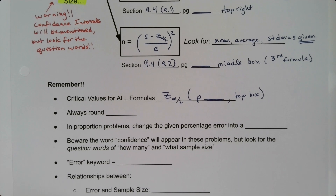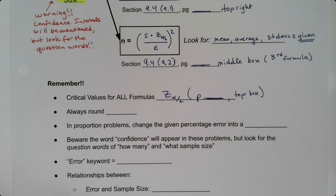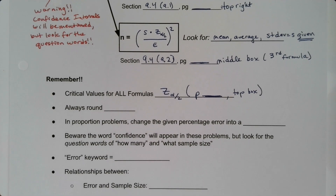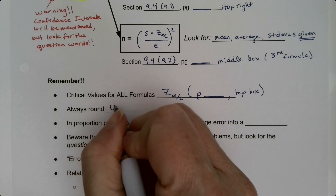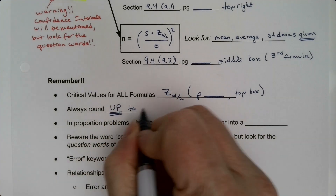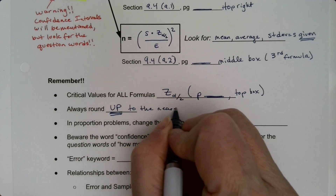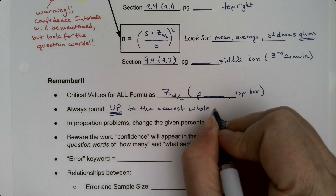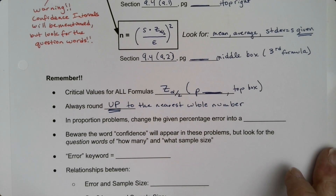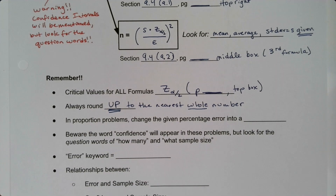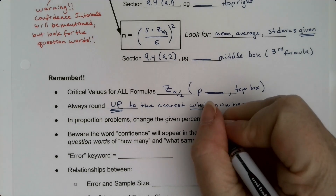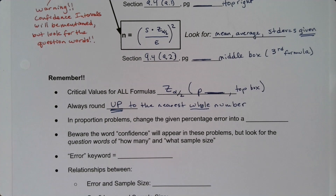Sample size has a unique rounding rule: no matter what, we always round up to the nearest whole number. Every other calculation in this class uses regular rounding — look at the next decimal place, five and higher go up, four and below go down. But for sample size, we always round up. It's the only time we do it that way.